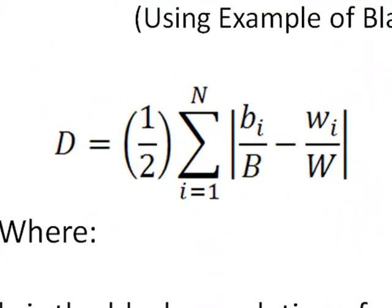Essentially the dissimilarity index consists of one ratio minus another ratio, and we take the absolute value of that. We sum that across all of the zones in the region — in our case Berrien County is the region and each zone will be a municipality — and then we divide by two, taking one half of that value.